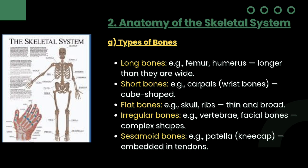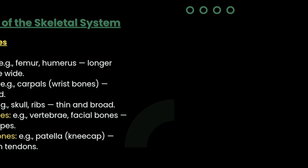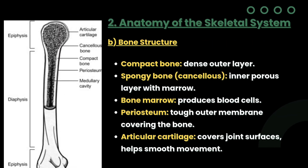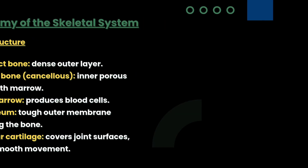Then we have to talk about bone structure. The dense outer layer is called compact bone, and the inner porous layer with bone marrow is called spongy bone. Bone marrow produces blood cells. Periosteum is the tough outer membrane covering the bone. Articular cartilage covers joint surfaces and helps smooth movement.